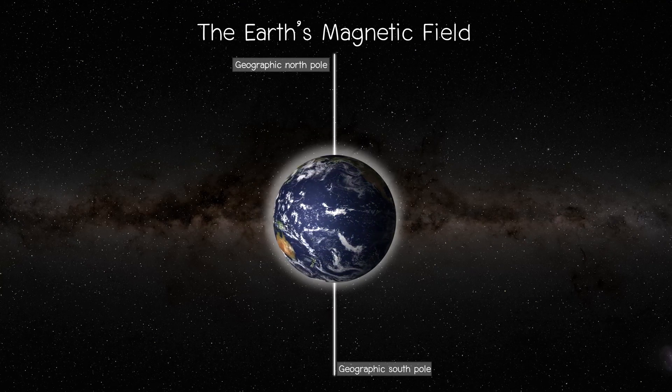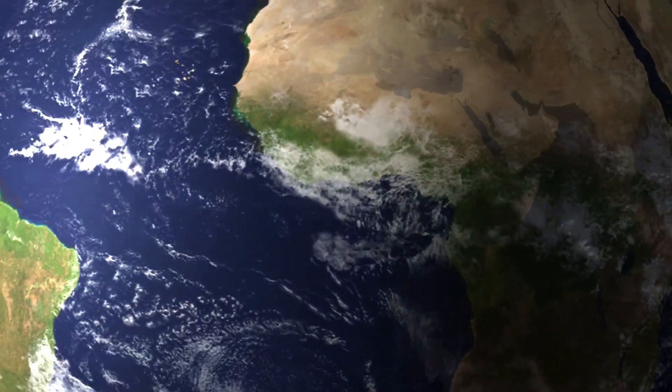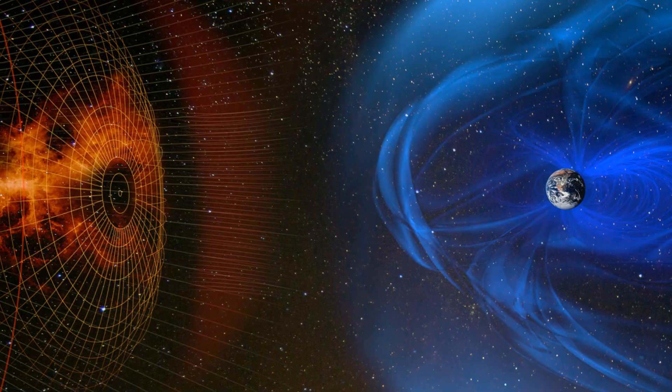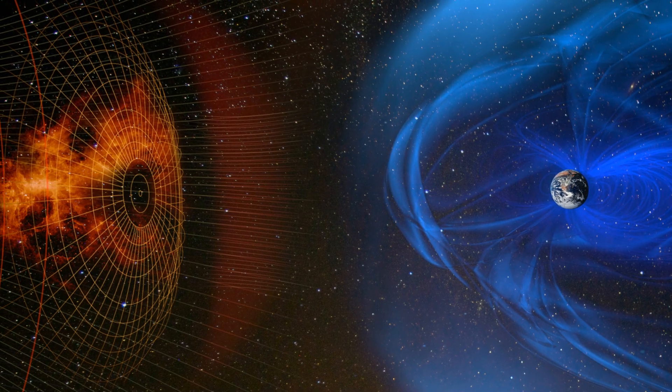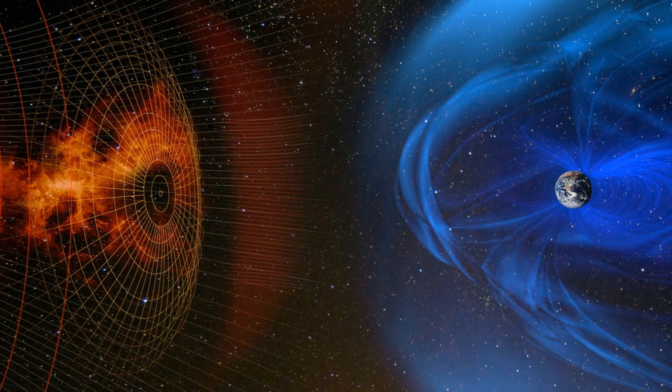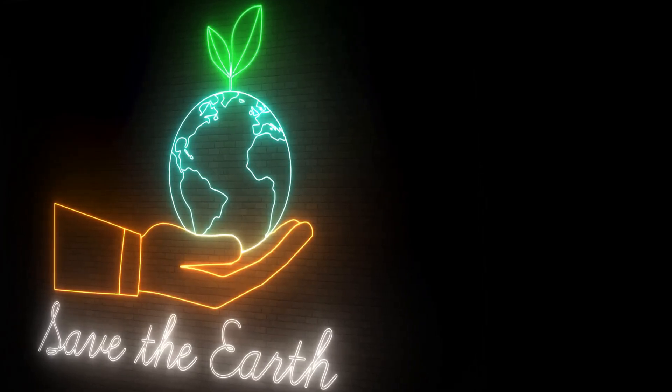Earth's rotation helps generate its magnetic field, which protects us from harmful solar and cosmic radiation. If the rotation stops, the magnetic field could weaken or vanish entirely, leaving the planet vulnerable to deadly radiation. This would further threaten life on Earth.